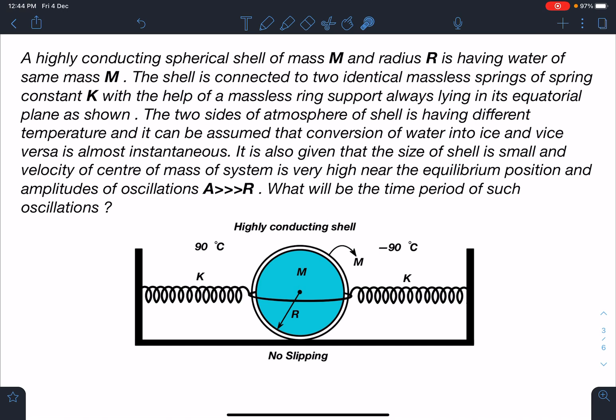Here the main part is to understand that if the shell goes towards left, since the temperature of atmosphere is 90 degrees and the shell is highly conducting, there will be water present inside the shell. Water will be in pure translation assuming negligible viscosity. Similarly, when I displace it towards right, temperature of atmosphere is minus 90 degrees Celsius, and if shell is highly conducting, the entire liquid will freeze instantaneously.